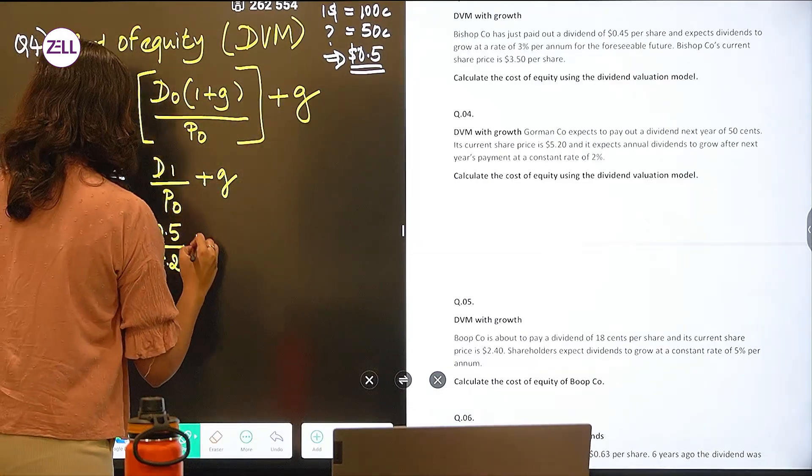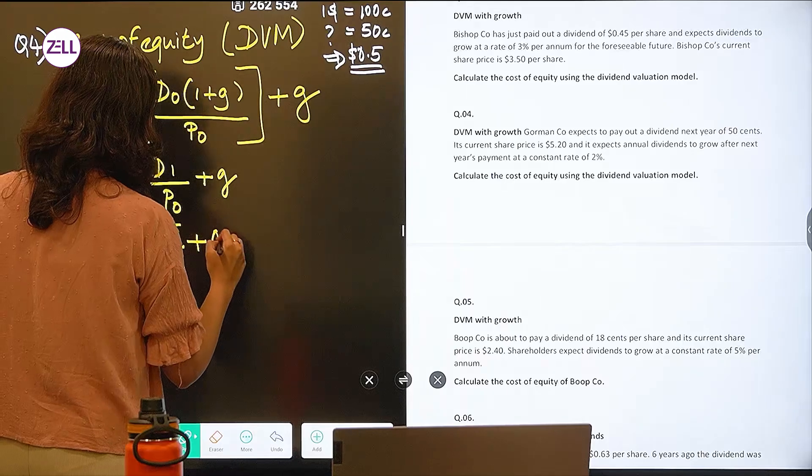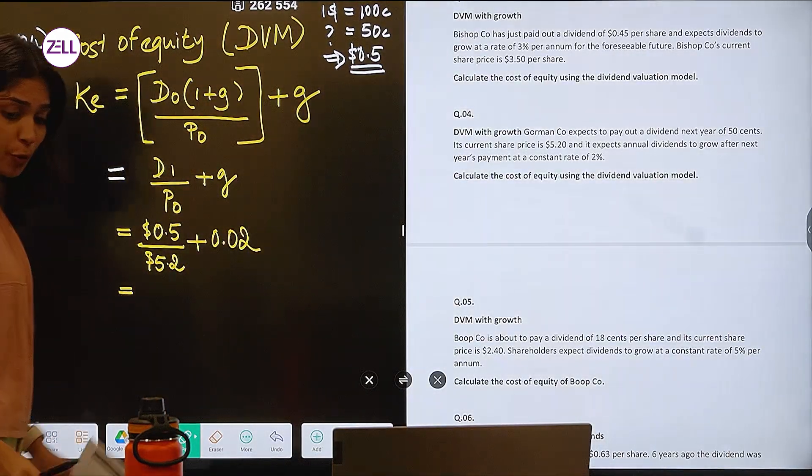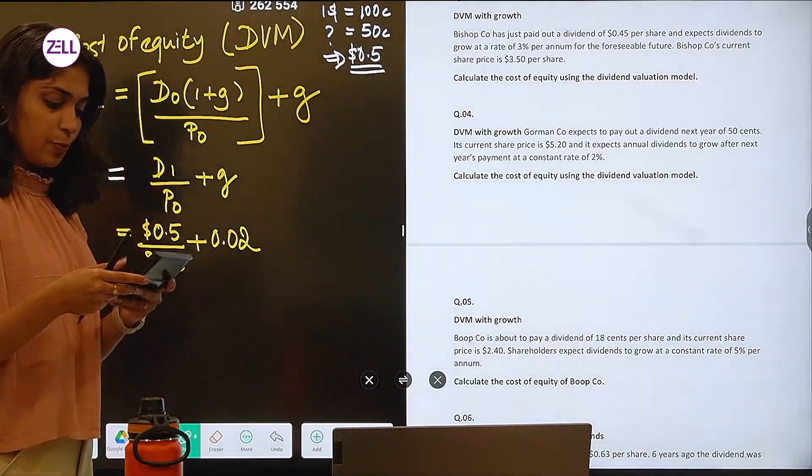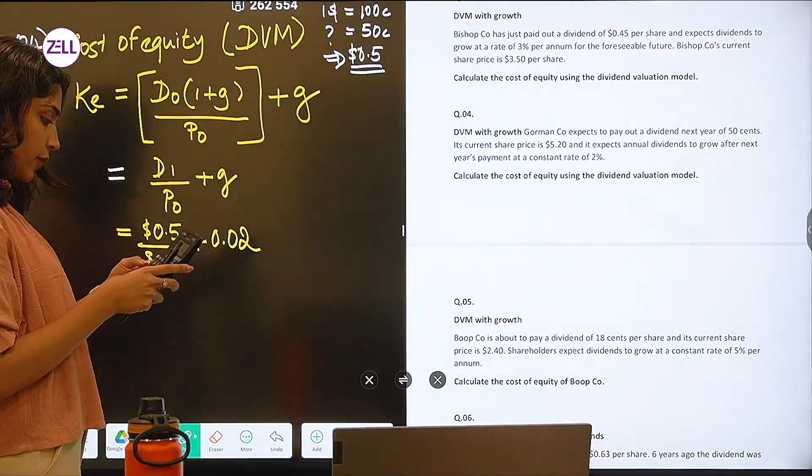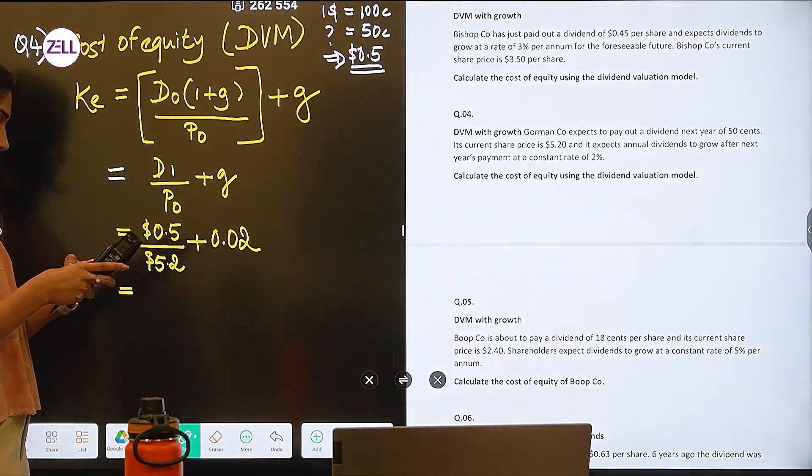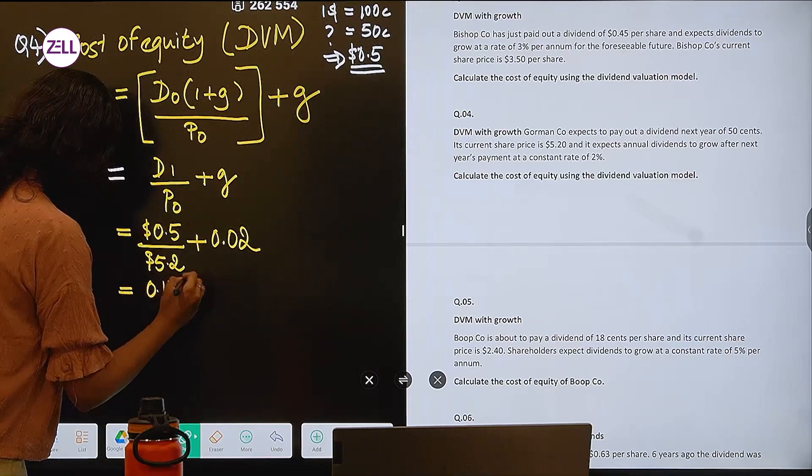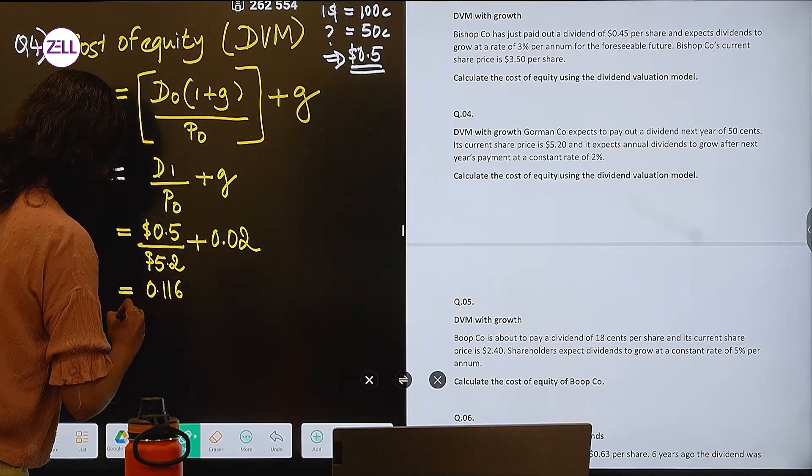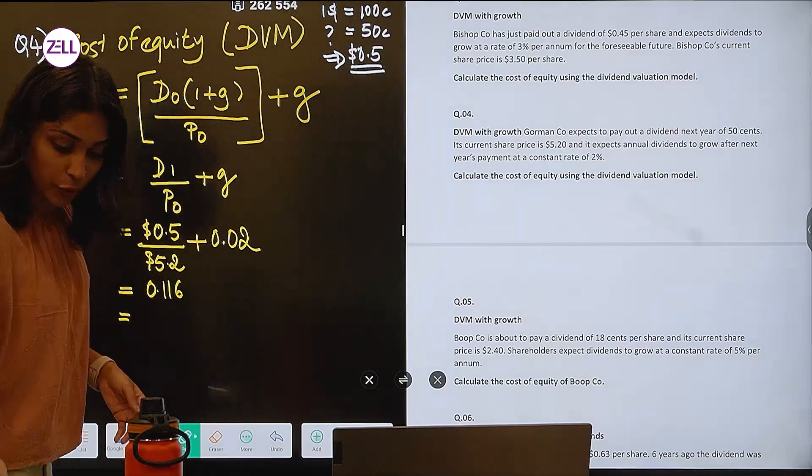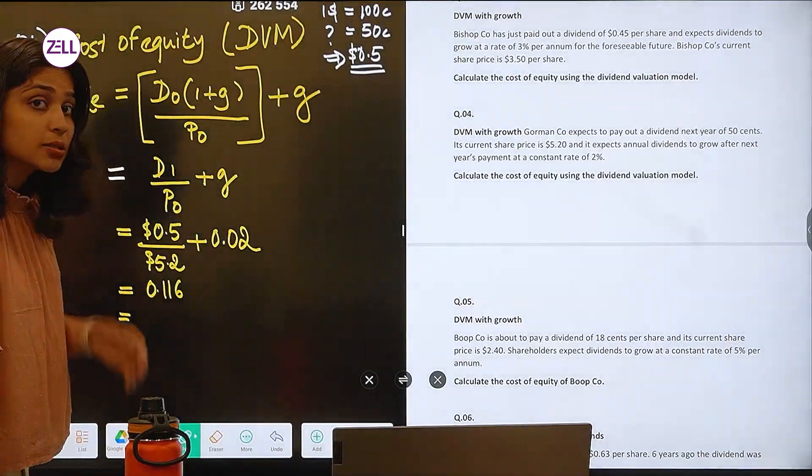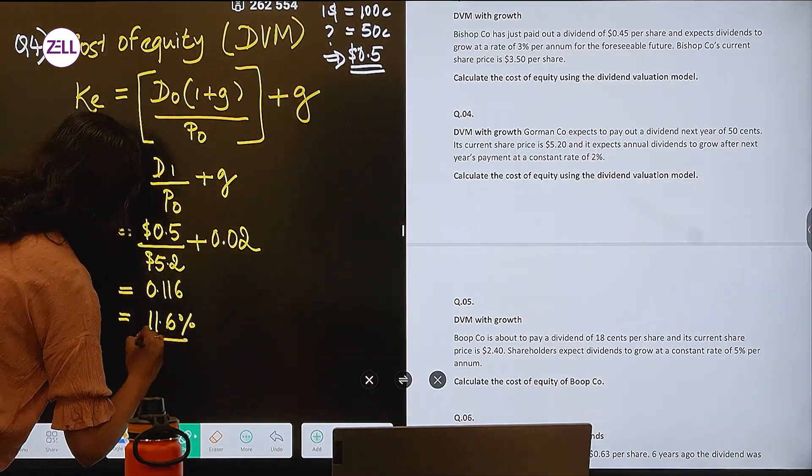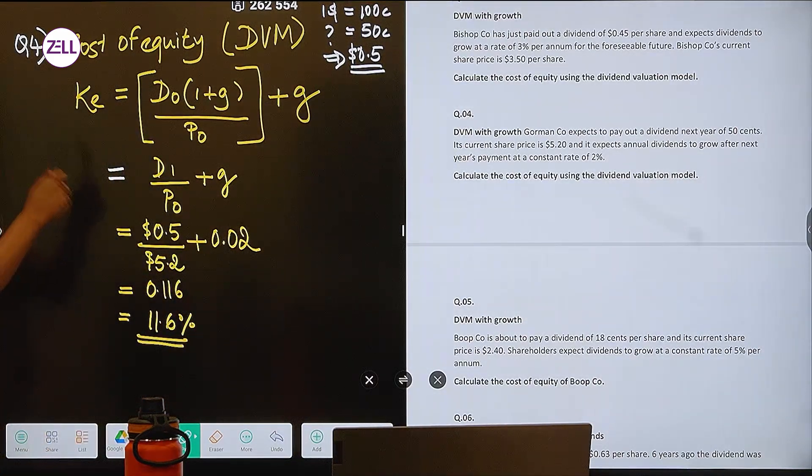So what is your answer? What is the growth rate? 2%. So solve this 0.5 divided by 5.2 plus 0.02. So you will get 0.116 which is 11.6%. What is 11.6%? This is your cost of equity.